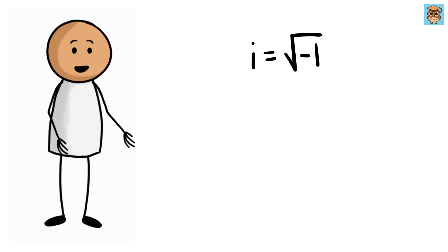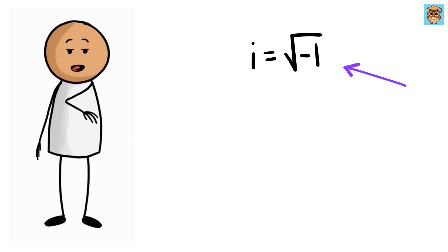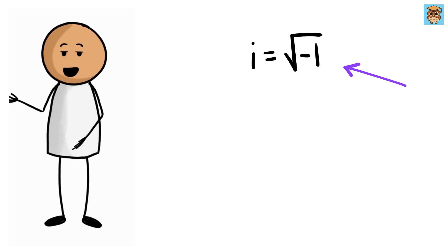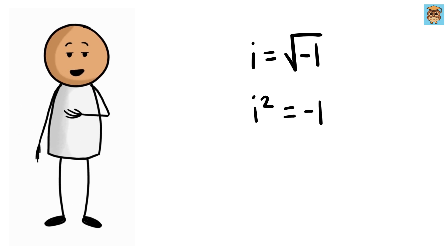We all have heard about the imaginary number i, which equals the square root of minus 1, or if we square on both sides, we get i² equals negative 1.